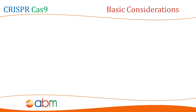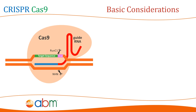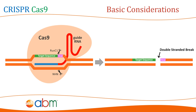The targeting specificity of the CRISPR-Cas9 system is determined by the 20 nucleotide sequence at the 5' end of the gRNA. For the S. pyogenes CRISPR-Cas9 system, the desired target sequence must immediately precede a 5' NGG protospacer adjacent motif or PAM. The gRNA base pairs with the complementary strand of the target sequence where the Cas9 nuclease mediates a double strand break around 3 nucleotides upstream of the PAM sequence. Note that the PAM sequence is not part of the 20 base pair gRNA sequence.